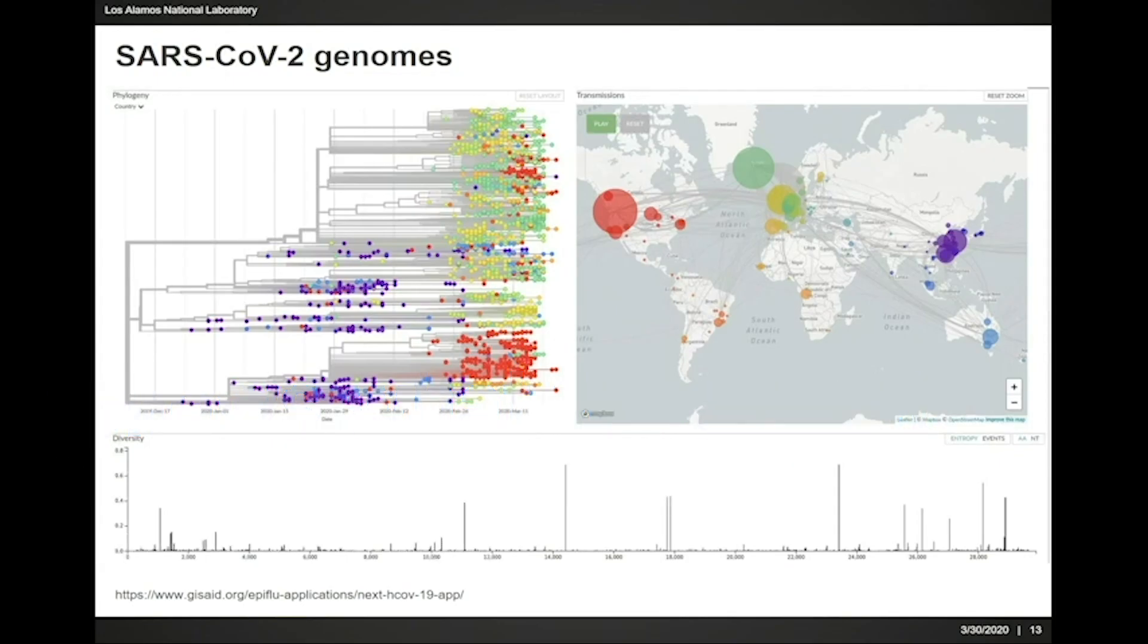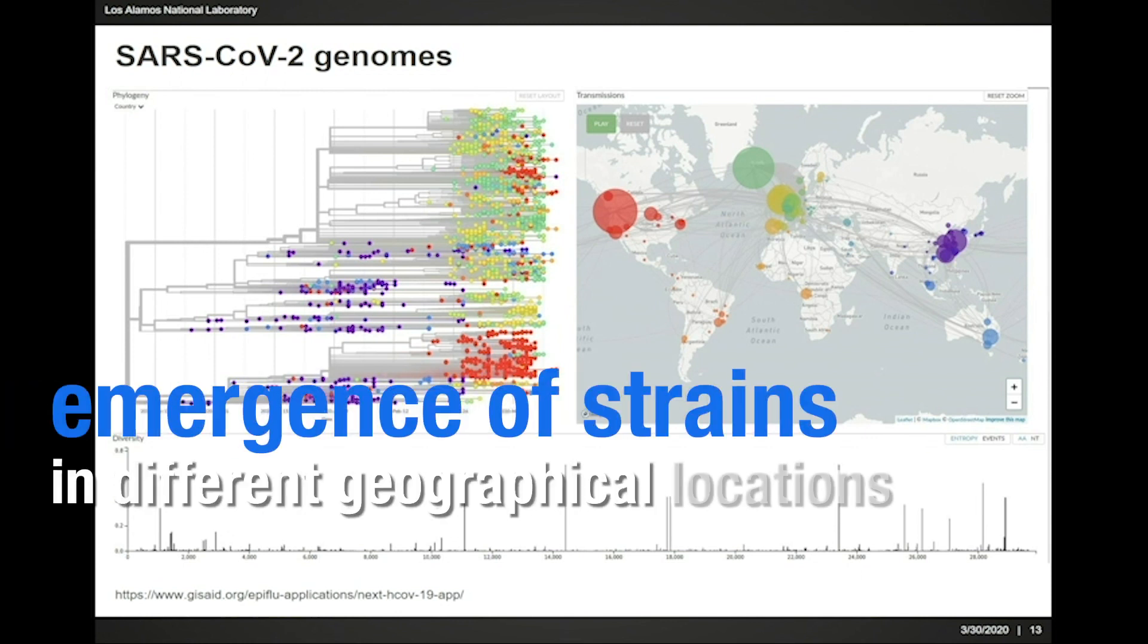Going a little bit further, we also can not only look at the tree, but also look at where geographically the strains have been sampled. What we see is that the strain is evolving slower than it moves across. We get something that people call the emergence of strains.